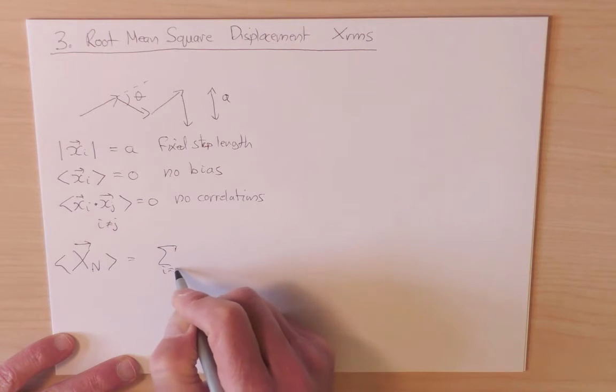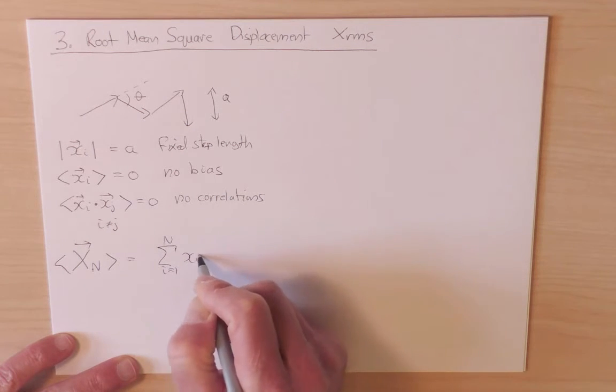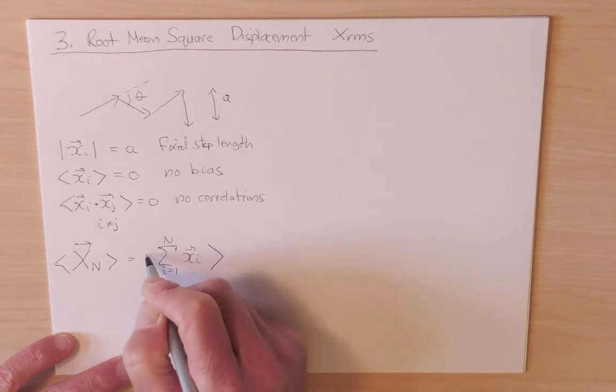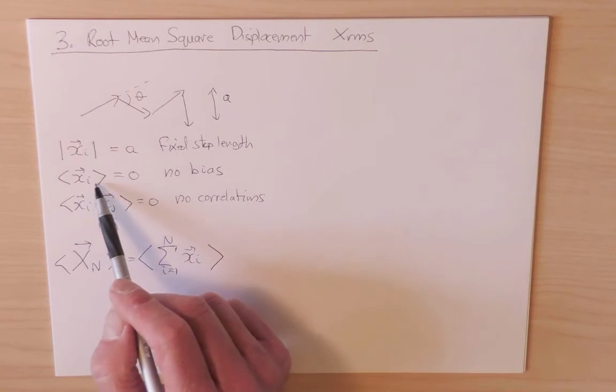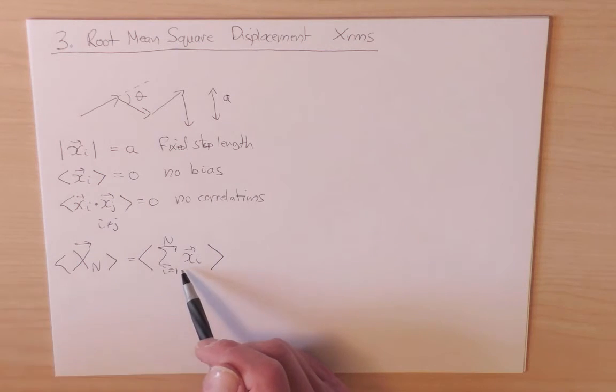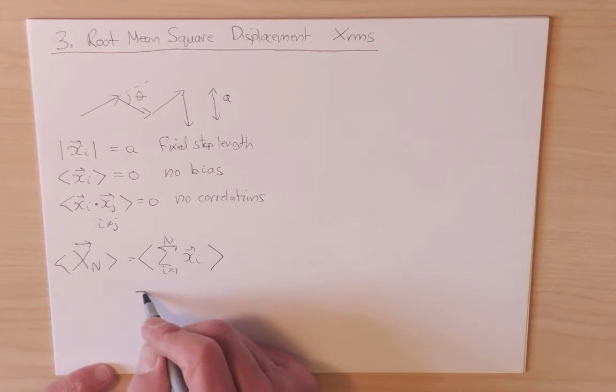But by construction, each X_i has an average value zero, so we're summing a whole bunch of values that equal zero, and so we get nothing.